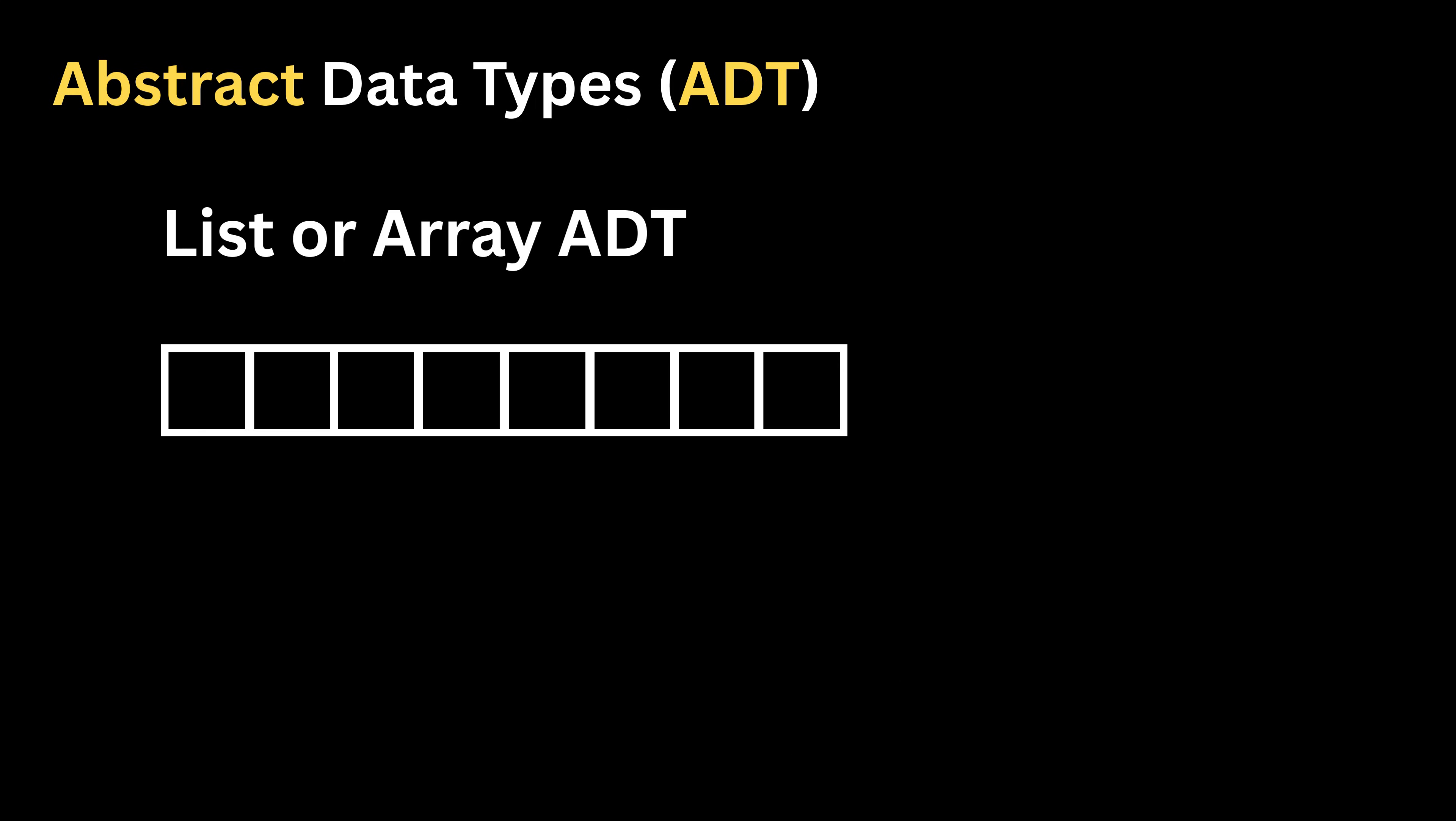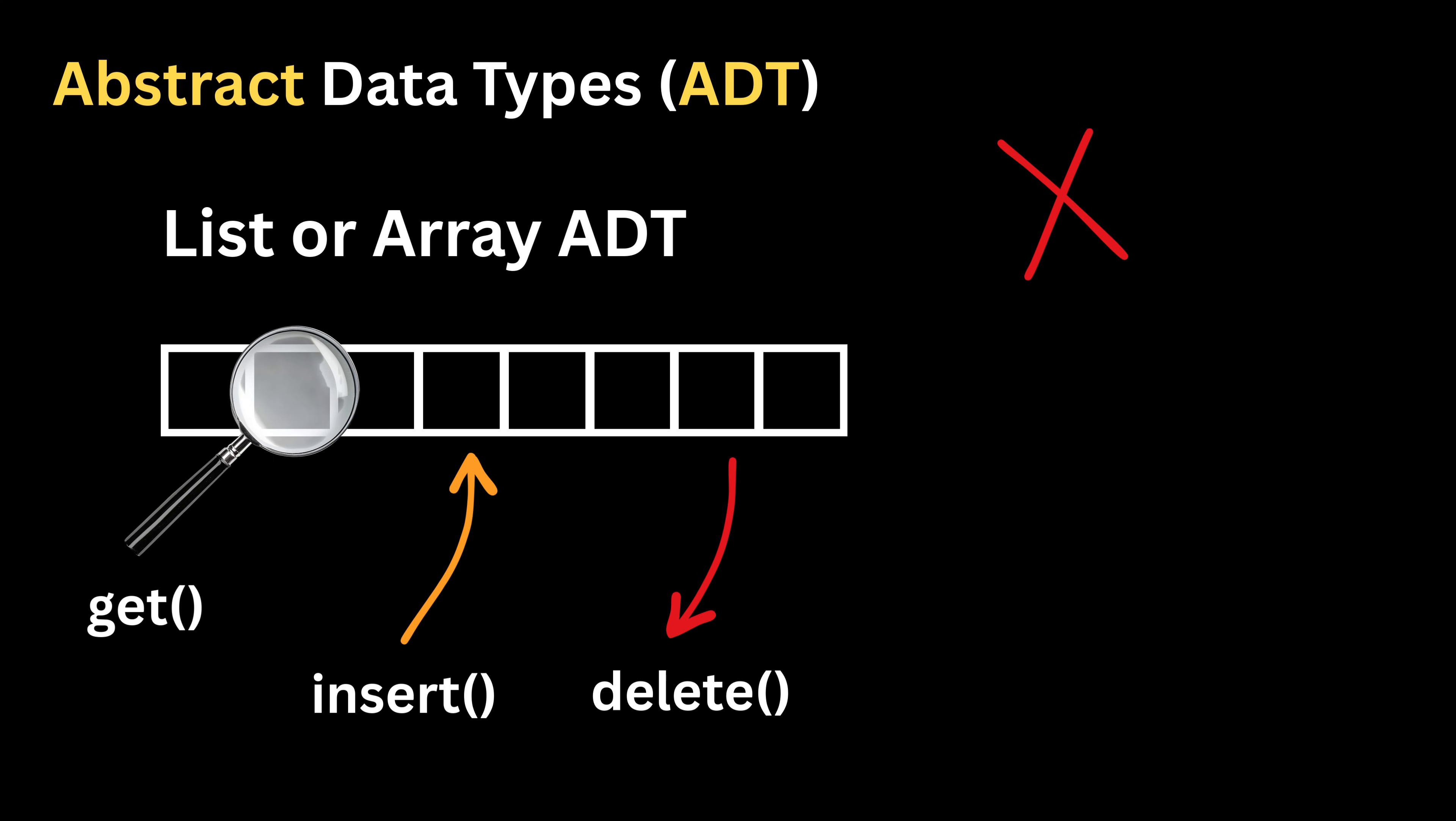The same idea applies to a list or array ADT, where we can insert an item, delete an item, or get an item at a certain position. We do not care whether the list stores items in continuous memory or scattered nodes connected through pointers.